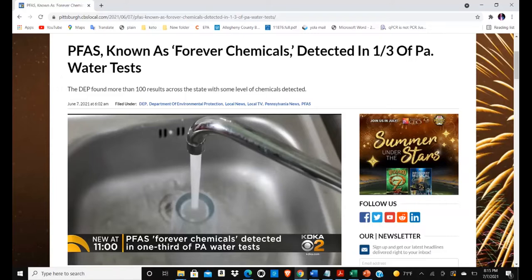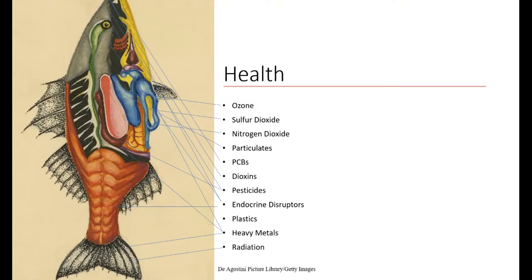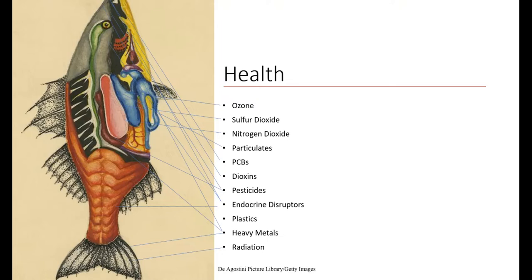PFAS forever chemicals were detected in a third of Pennsylvania water tests. Thinking about the different kinds of toxins in the environment and human health: ozone from traffic, sulfur dioxide from industry, nitrogen dioxide, particulate matter, PCBs in light fixtures for decades, dioxins, pesticides, endocrine disruptors, plastics, and heavy metals and radiation. The exact same biological processes that a fish needs to be a fish are present in our own systems — these toxins affect other organisms and species as well. Our own health is a measure of the health of the species around us, and the same goes for plants, which have DNA replication, DNA repair, mitochondria, cellular division, and hormonal systems.